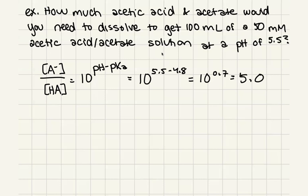So what is this telling us? It's telling us that we have five parts of our conjugate base for every part of our conjugate acid. So if we want to figure out the fraction of A minus, then that's going to equal 5.0 divided by 1 plus 5.0. So that's going to equal about 0.83.